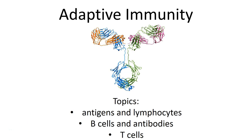Today in this lecture, we'll be learning about adaptive immunity, also known as acquired immunity. The topic specifically that we'll be discussing will be antigens and lymphocytes, immune cells of the immune system. These are the B cells and the T cells specifically.